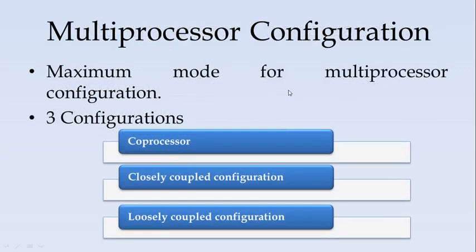In multiprocessor configuration, the 8086 operates in maximum mode — the min/max pin should be configured for maximum mode. The 8086 supports three multiprocessor configurations: the first is the co-processor configuration, the second is the closely coupled configuration, and the third is the loosely coupled configuration.